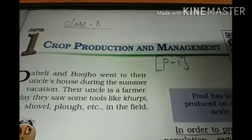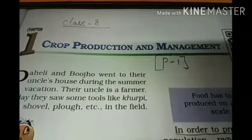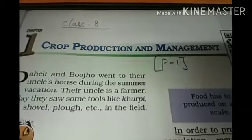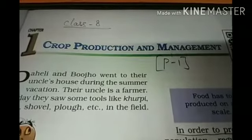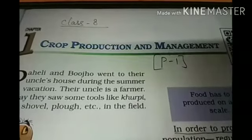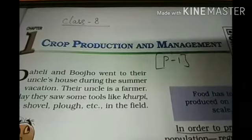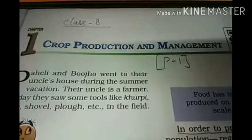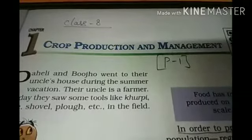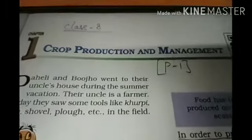Welcome to class 8 science. Today we are going to start with a new topic: crop production and management. From where do we get energy? Yes, from the food we eat. The energy from the food is utilized by organisms for carrying out their various body functions. All living beings need food for energy.